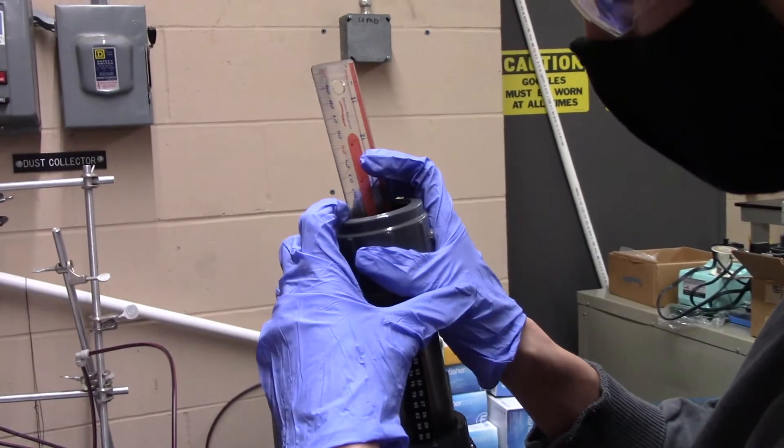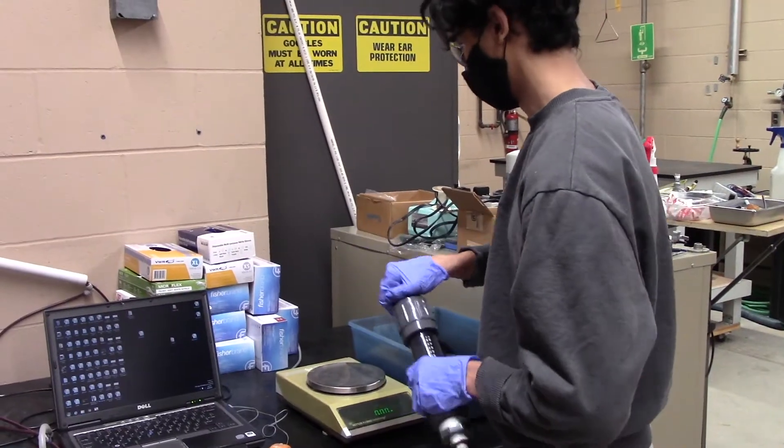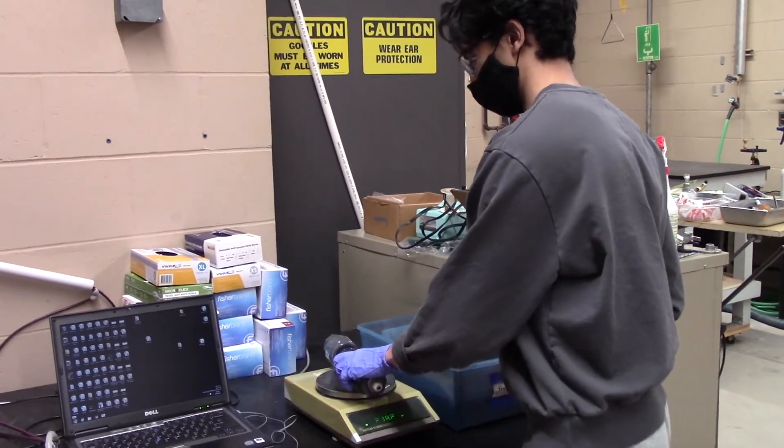Afterwards, take a ruler and measure out the depth of the column in centimeters. Once this is accomplished, tighten the column's cap and weigh it on the scale.